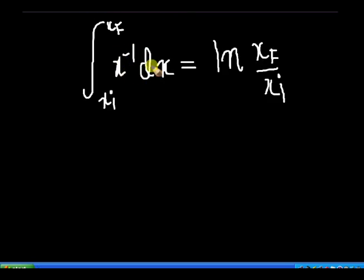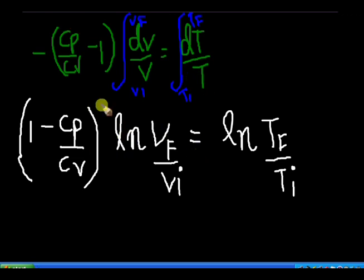We know that the integral of x raised to minus 1 dx is equal to log to the base e of Xf minus Xi, which can also be written as log base e of Xf minus log base e of Xi — just simple logarithm primary rules. Applying it, we get (1 minus Cp/Cv) log base e of Vf/Vi equal to log base e of Tf/Ti.